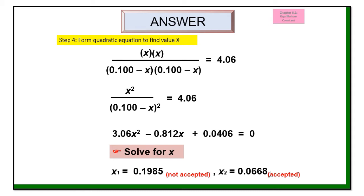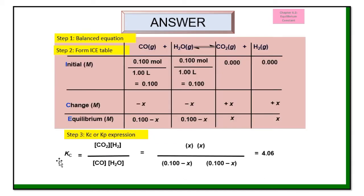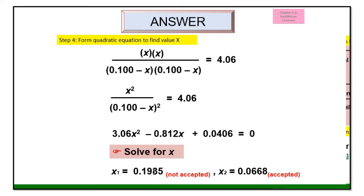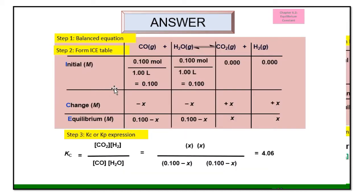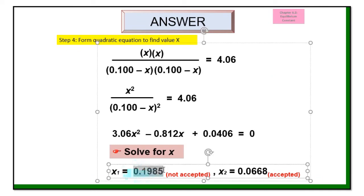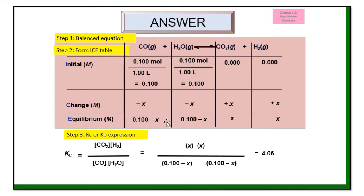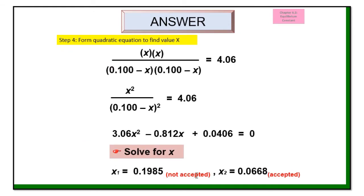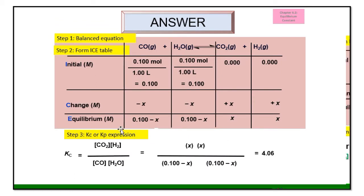How to choose? Since both values are positive, we substitute them back. The initial concentration is 0.1, so consider: is it possible that x is larger than 0.1? If we take 0.1985, then 0.1 minus 0.1985 gives a negative concentration, which is impossible. So this value of x is not accepted — rejected. The other value, 0.0668, is accepted because substituting it keeps the concentration of CO and H2O in positive values.